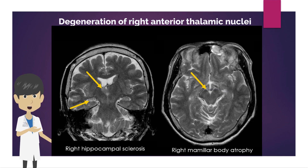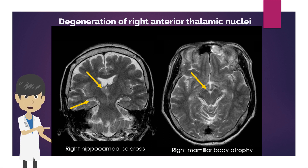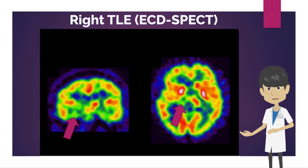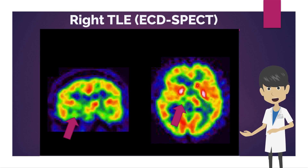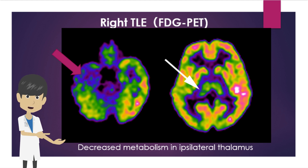Neurodegeneration in temporal lobe epilepsy via the Papez circuit can be seen on MRI. T2-weighted images show right hippocampal sclerosis and high intensity in the right anterior thalamic nucleus. There is also atrophy of the right mammillary body. In right temporal lobe epilepsy, decreased perfusion in the right thalamus is seen on brain perfusion SPECT, and FDG PET shows decreased glucose metabolism in the right thalamus, due to deafferentation through the Papez circuit.